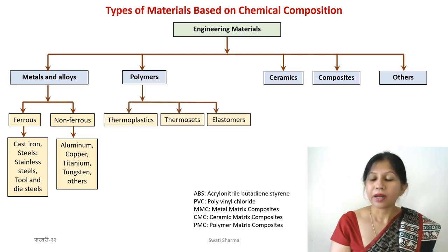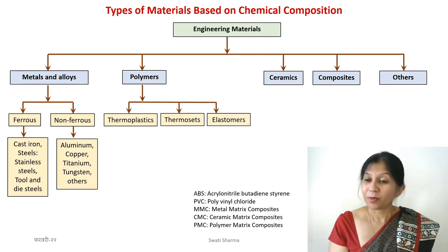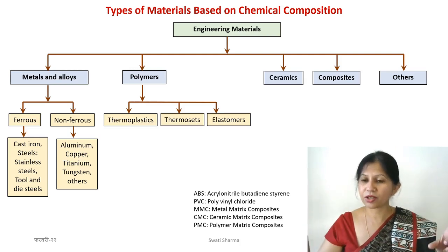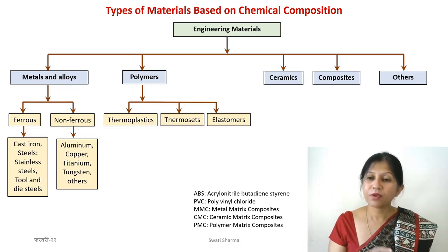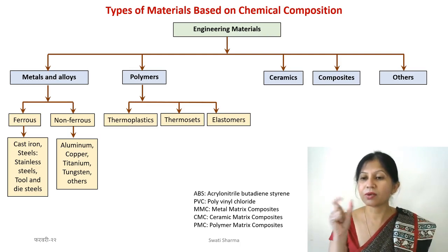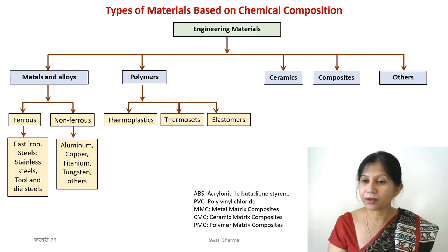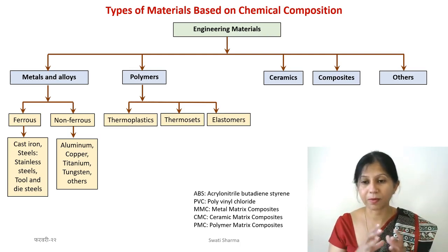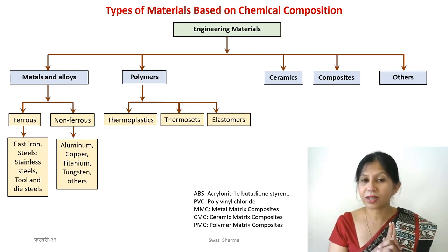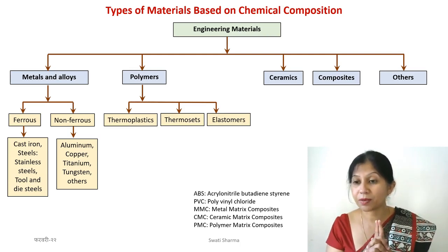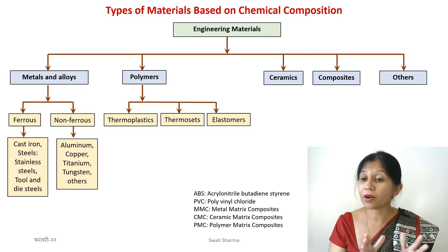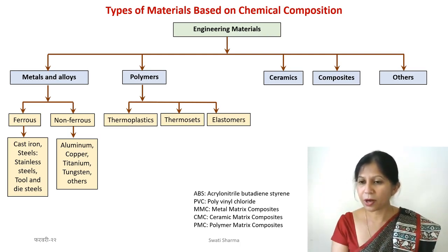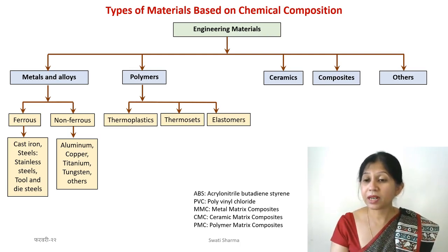The next class is polymers. Polymers are long-chain or sometimes sheet-type structures made of tiny repeating units known as monomers. Polymers can be classified as thermoplastic polymers or thermosetting polymers. We will have a dedicated lecture introducing polymers in detail.